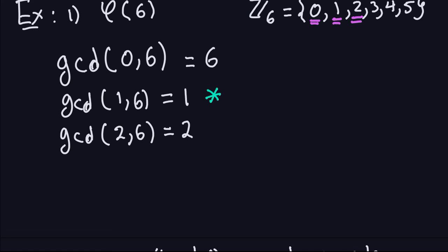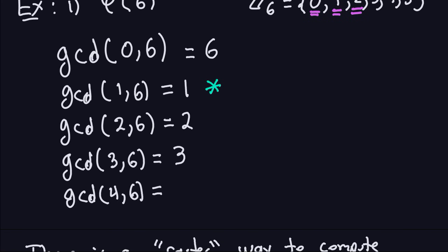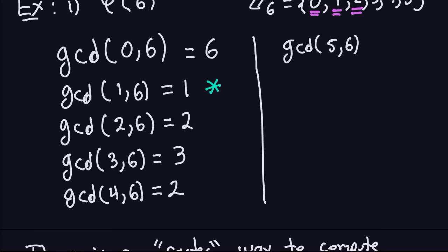Next, the GCD between 3 and 6 is not equal to 1 — it's actually equal to 3 — so I don't count it. The GCD between 4 and 6 should be 2, so they are not relatively prime. Finally, the GCD between 5 and 6 is equal to 1, so I'm going to count that as one of the numbers that are relatively prime.